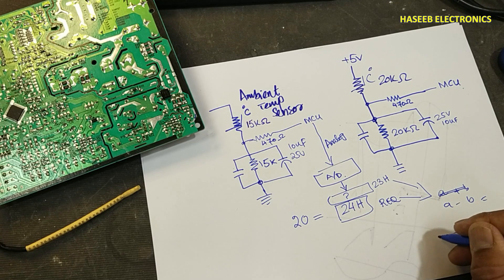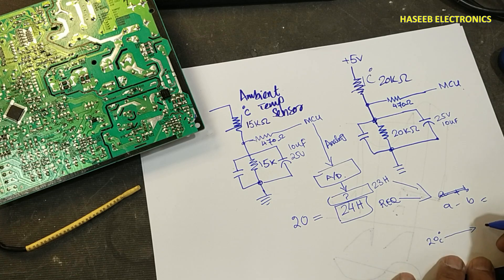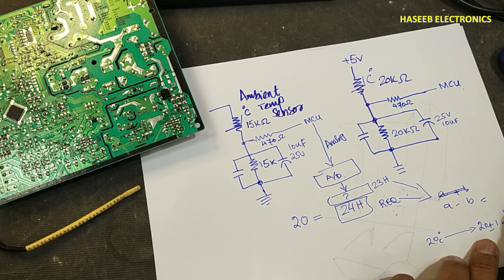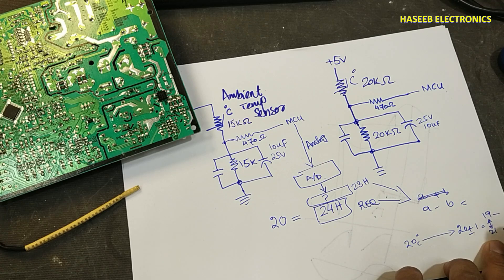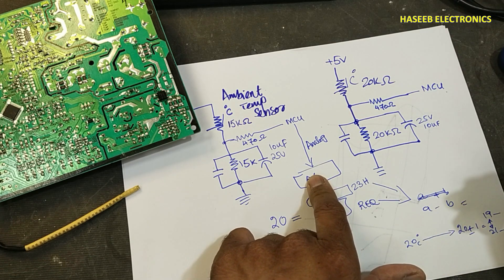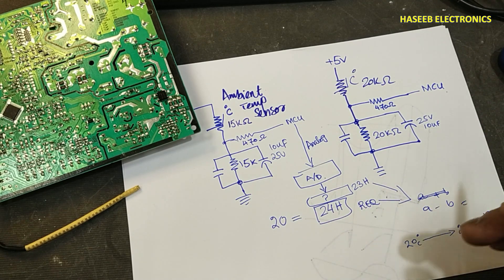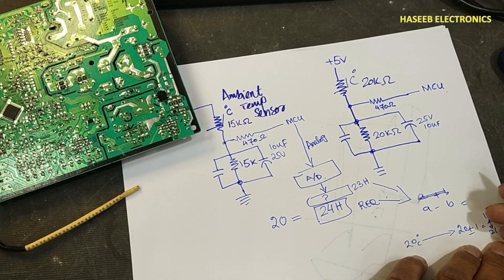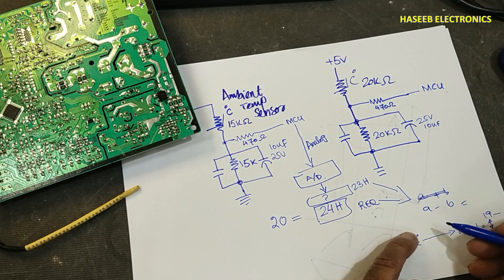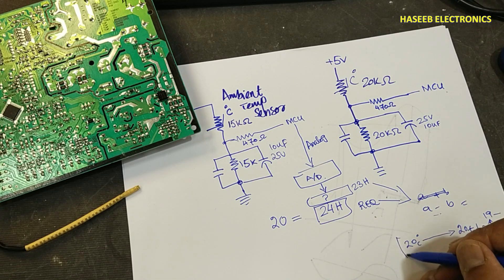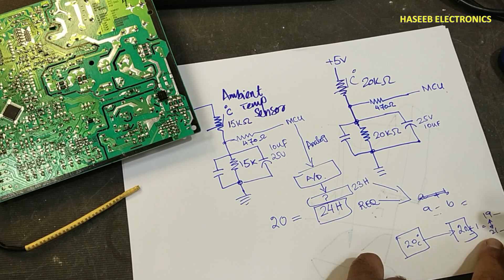The microcontroller has a defined window — for example, 20°C ±1°C (19 to 21°C). If the present temperature value is outside this window, it turns on the compressor, which starts cooling. As cooling progresses, the sensor voltage changes and the microcontroller monitors it continuously. When the present value falls within the window (required value reached), it turns off the compressor.